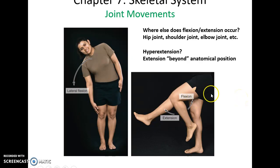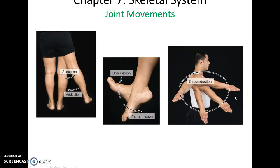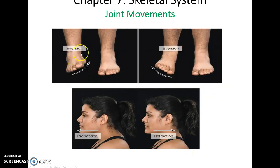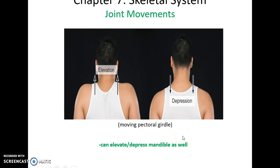Movements include lateral flexion of the vertebral column moving to the sides, flexion and extension at many joints including the knee, abduction and adduction moving away from or toward the midline, dorsiflexion and plantar flexion of the foot, circumduction as a circular movement, medial and lateral rotation at ball-and-socket joints, supination and pronation of the hand, inversion and eversion of the feet, protrusion and retraction of the jaw, and elevation and depression of the shoulders — which is movement of the pectoral girdle, not at the shoulder joint itself.